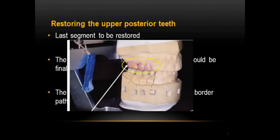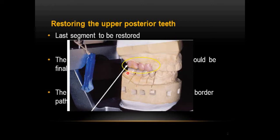As you can see here, this is the fossa condoring guide, which helps us ensure that our fossa inclines are proper in the lower posterior teeth. To know more about this fossa condoring guide, you can watch my previous session of full mouth rehabilitation — the link is given in the description box below. We usually prefer to tie this fossa condoring guide on our articulator so it enables us to check our fossa inclines after setting.